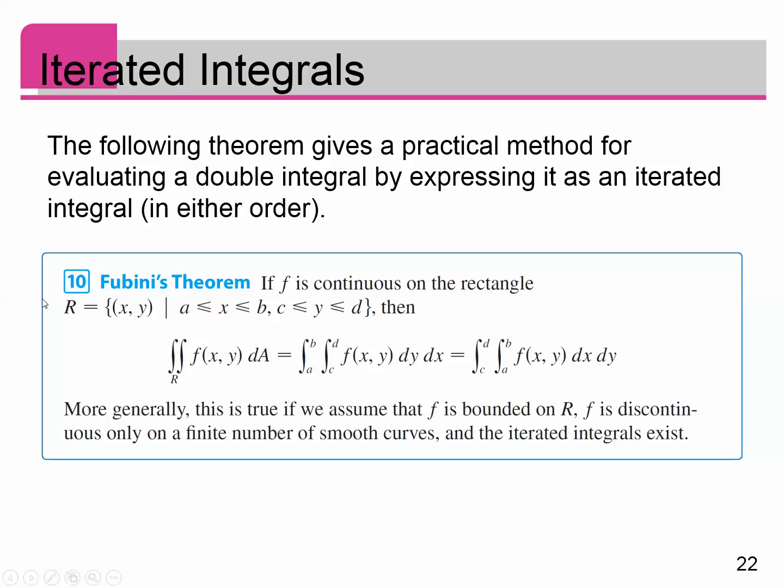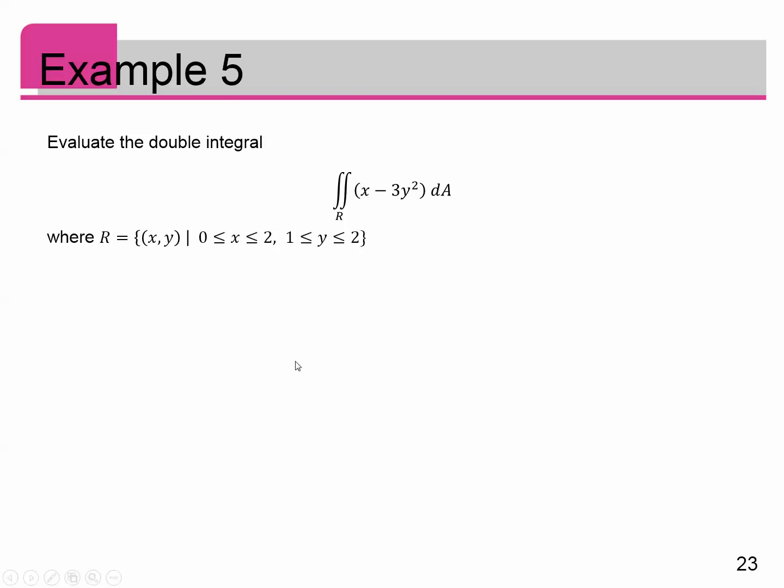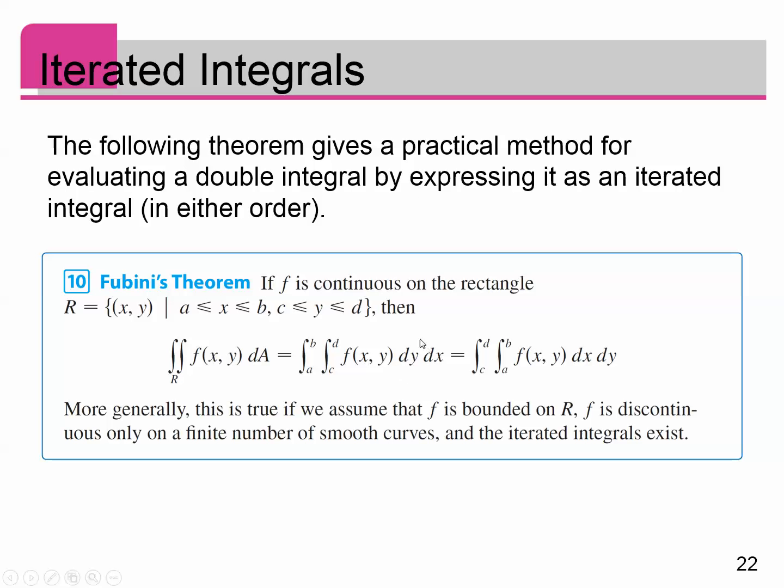If F is continuous on a rectangle, R is the rectangle, X goes from A to B, Y goes from C to D, then the double integral of F of X, Y, DA is the integral from C to D of F of X, Y, DY, then integral from A to B over DX. So integral from A to B, integral from C to D of F of X, Y, DY, DX. Or you can switch the order. Do on the inside the X and on the outside the Y. Notice how the limits always match. So inside the X's goes from A to B. On the outside over here, the X's go from A to B. And similarly, on the inside over here, Y goes from C to D. On the outside, Y goes from C to D.